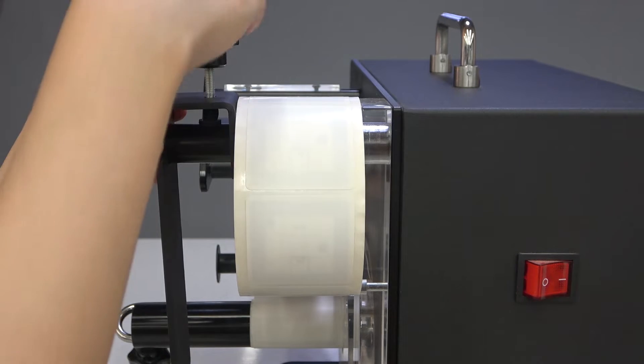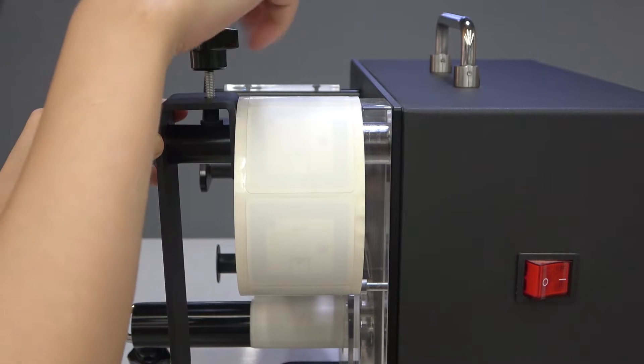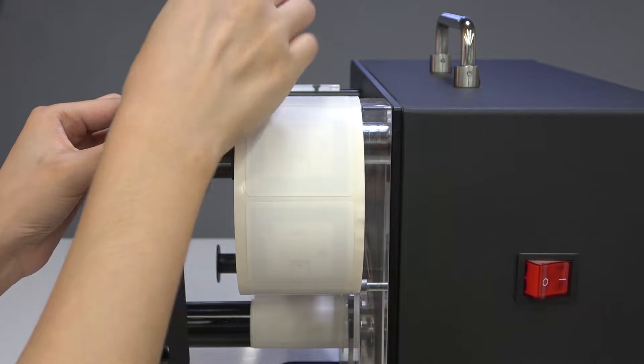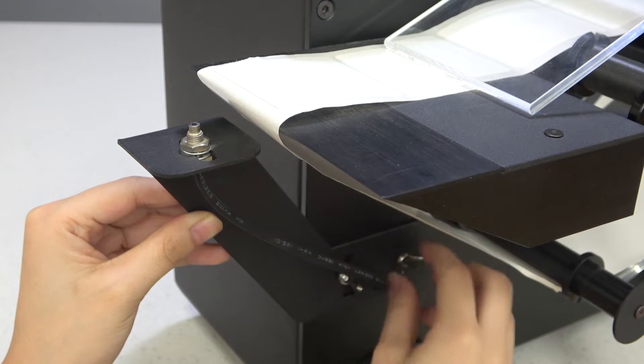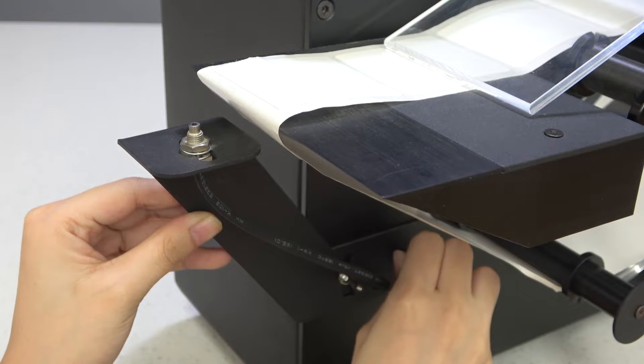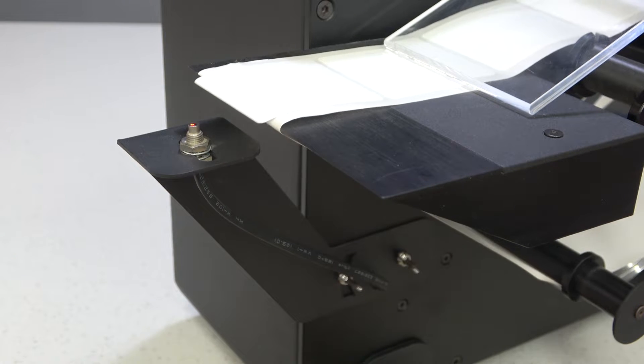During installation, the stripping width of the tag can be adjusted by adjusting the optical fiber hand. If it is adjusted outward, the stripping width will be wider, on the contrary, the stripping width will be narrower.